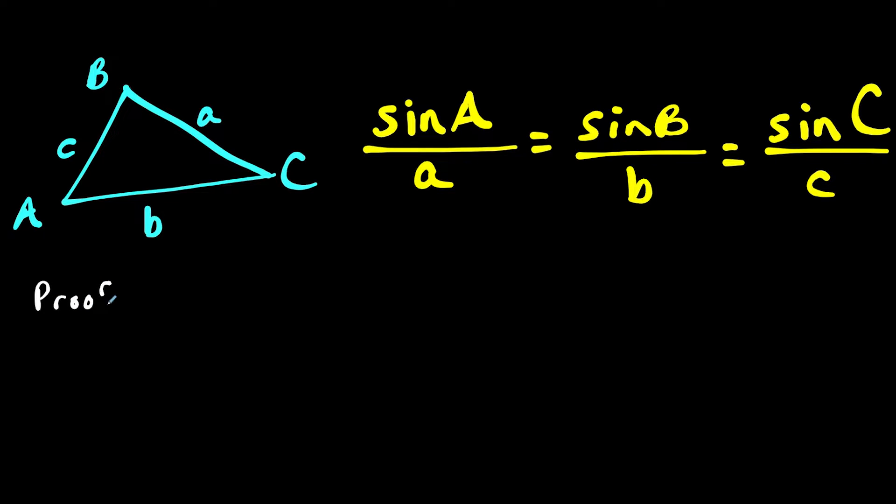So to prove this, I want to look at the area of triangle ABC using the trig formula. So I could say one half, and if I pick two sides, let's say I pick sides B and C.